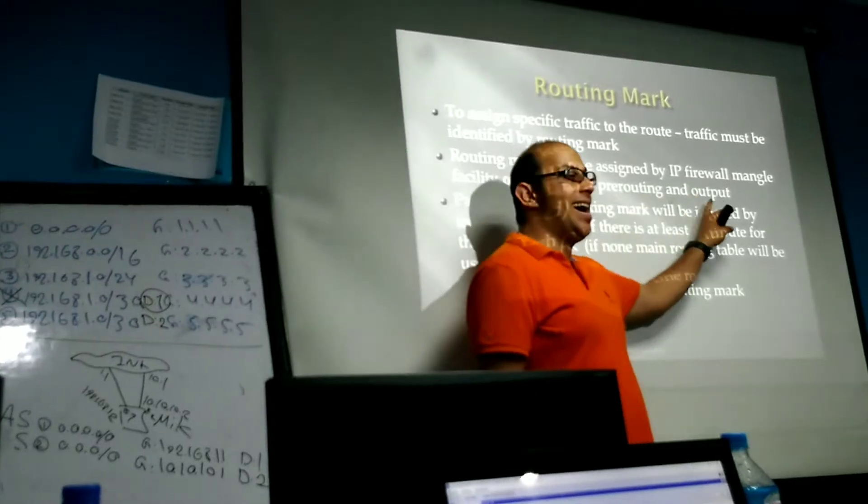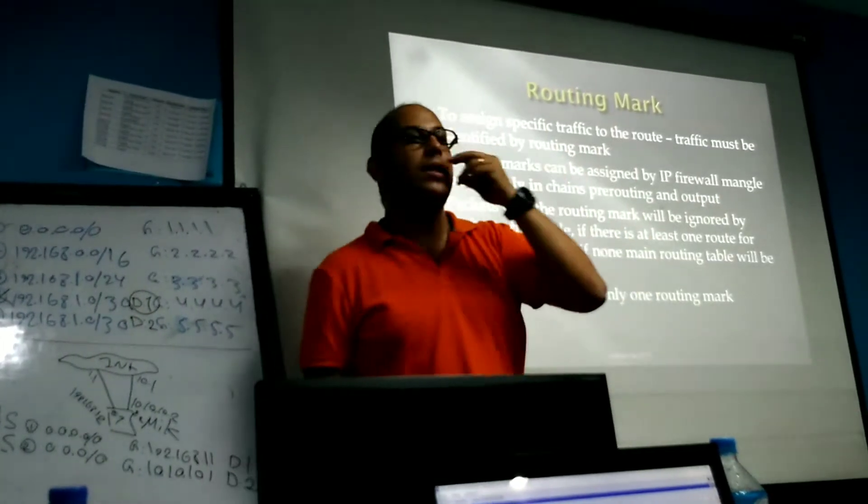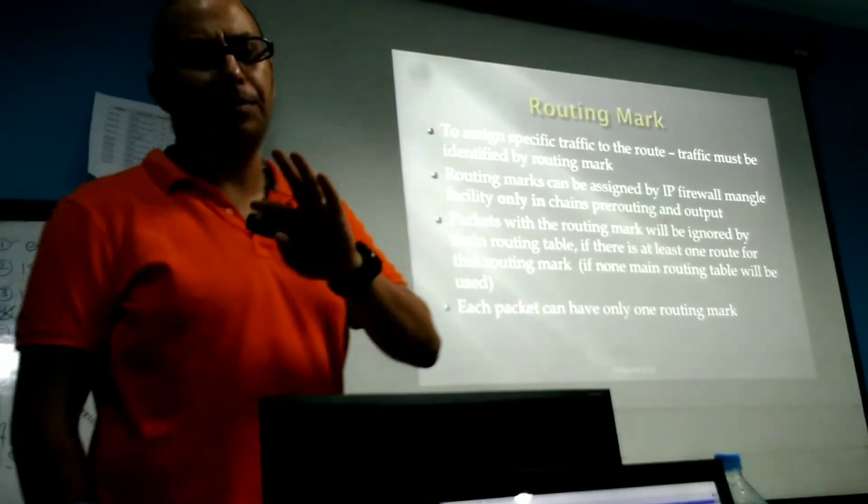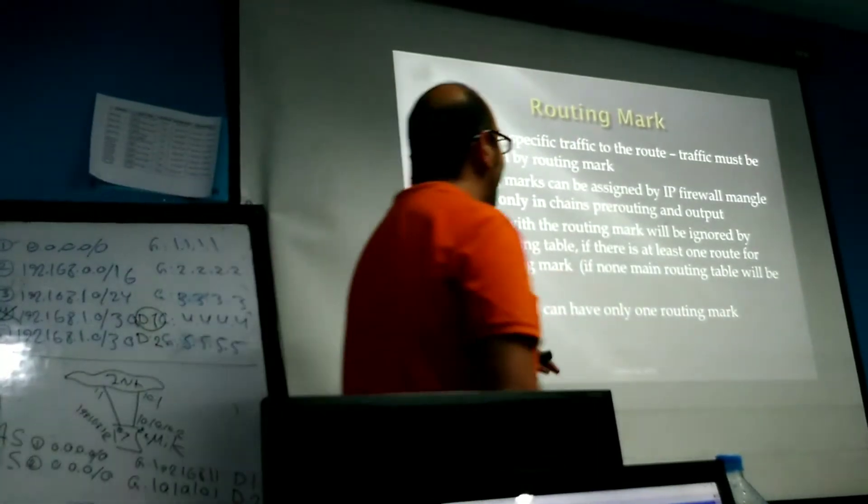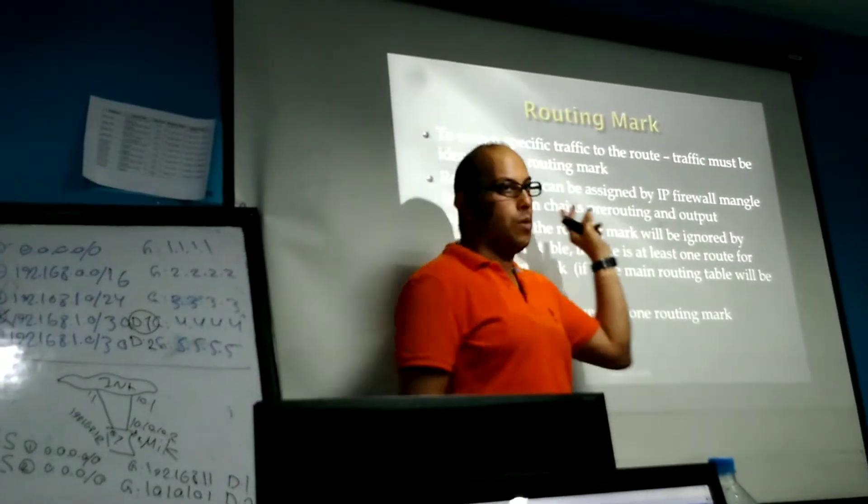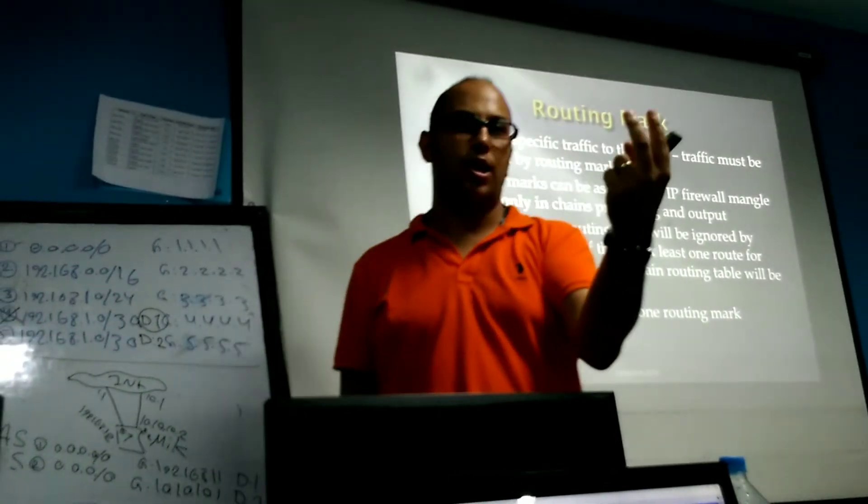There is a reason for this. You need to analyze the packet flow diagram. It's an MTCTC concept, but at the moment just memorize that routing mark is only possible in two chains: pre-routing and output.